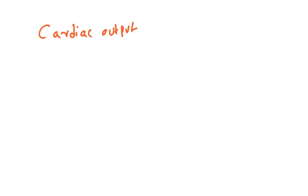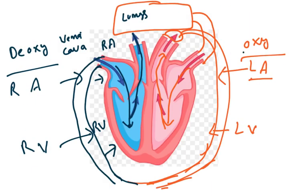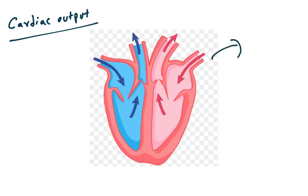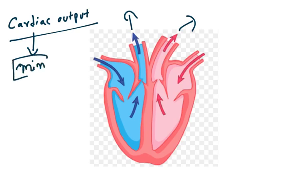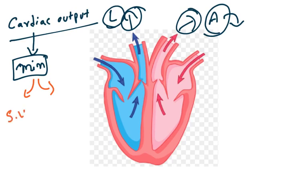Now let us understand cardiac output. Cardiac means heart, output means what is coming out of the heart — blood comes out of the heart. So cardiac output literally means the amount of blood which comes out of the heart per minute. In one minute of time, how much blood is coming out of the heart is known as cardiac output, whether it is going to the lungs or to the aorta and all parts of the body.